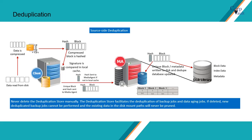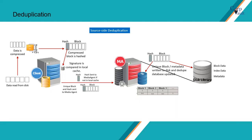Please note: never delete the deduplication store manually. The deduplication store facilitates the deduplication of backup jobs and data aging jobs. If deleted, new deduplicated backup jobs cannot be performed, and the existing data in the disk mount paths will never be pruned. The deduplication store is configured when creating a storage policy copy, both for primary and secondary storage policy copies. The media agent associated with the data store could be any one of the media agents in the data paths, or outside of the data path too.